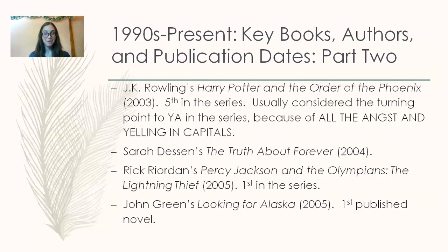Sarah Dessen's The Truth About Forever is published in 2004. Rick Riordan's Percy Jackson and the Olympians: The Lightning Thief is published in 2005 — the first in that series, with other companion series following as well. John Green publishes Looking for Alaska in 2005 — that's his first published novel; he's another very prolific and well-respected young adult author.